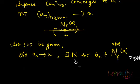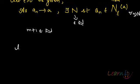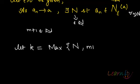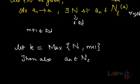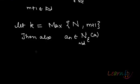This capital N is a natural number, and m+1 is also a natural number. What we can do is take k as the maximum of these two numbers. If k is the max of these two numbers, then the sequence a_n will still belong to the epsilon neighborhood of a. I am noting this because my notations are coinciding with each other.